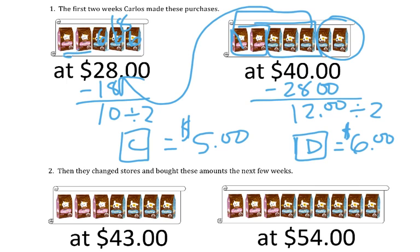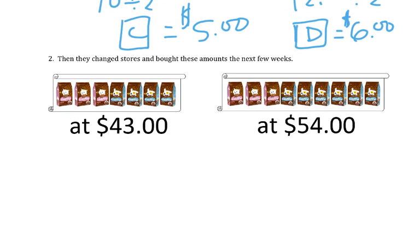And if you wanted to, you could double check it. This would be 10, would be 30, 10 and 30 would be 40. Let's try that same idea on number two.